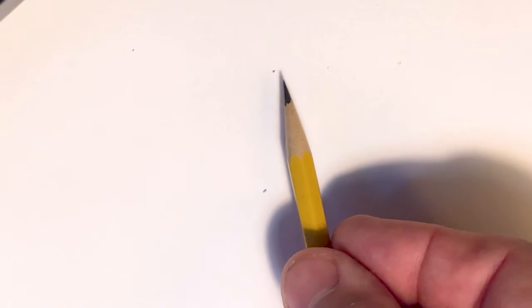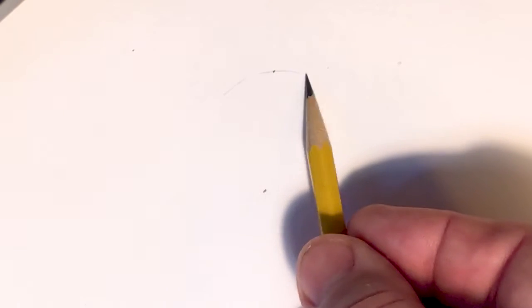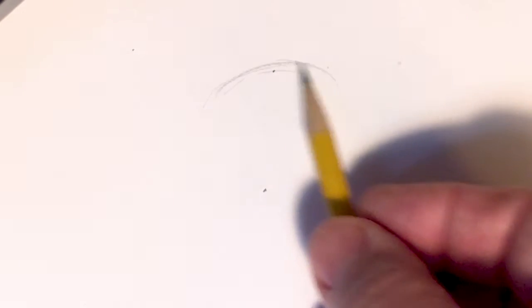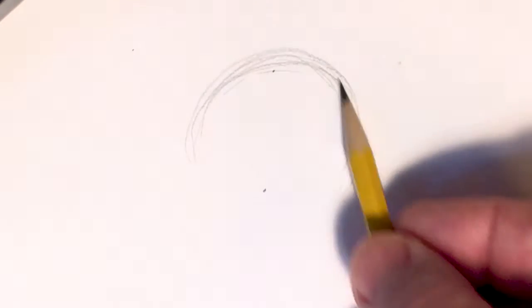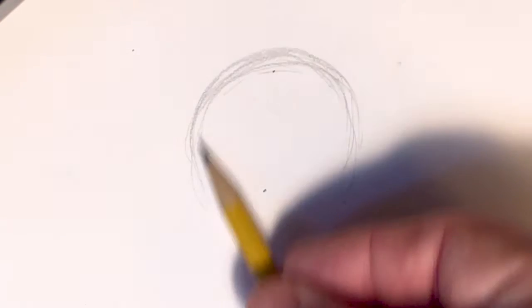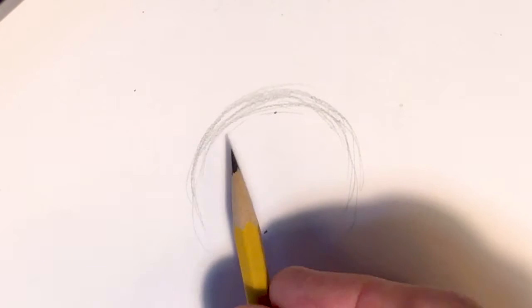All right, cartoon fans, let's draw a little Franklin. Step number one, in the center of your paper, lightly, and that's the key word to sketching, lightly sketch in a circle that's about as big as an orange. There we go. Lower him down just a little bit here. I'm gonna draw some hair in a moment.